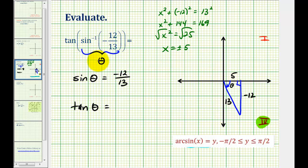And that would be the ratio of the length of the opposite side to the length of the adjacent side, or negative twelve-fifths. So this expression simplifies to negative twelve-fifths. I hope you found this helpful.